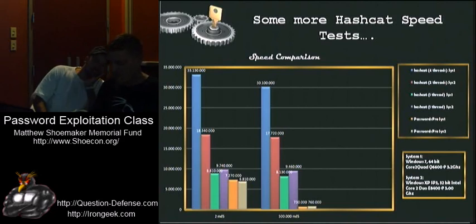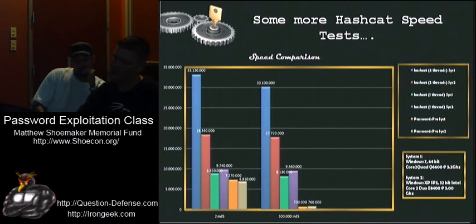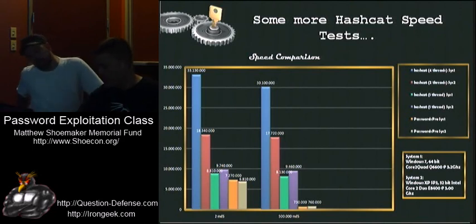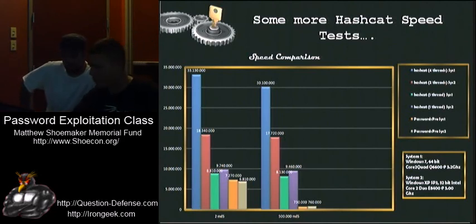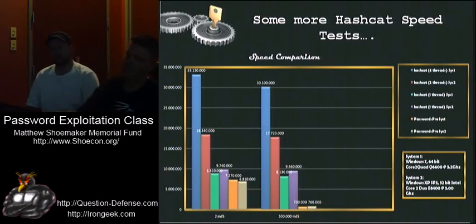Here are some more Hashcat speed tests. This is compared against Password Pro again. Password Pro was basically the best password cracking software on the market until Hashcat came around. As you can see, Passwords Pro on System 1 gets 7.27 million passwords per second, and Hashcat with only one thread on System 1 is 8.8 million. So even just the software compared one thread at a time, it's a million keys per second faster.